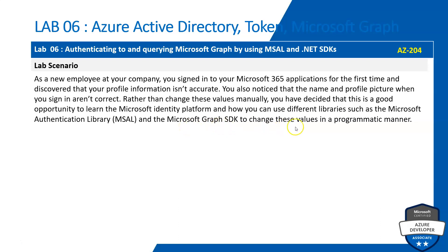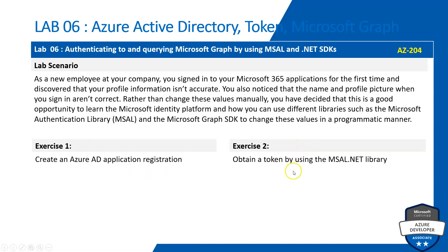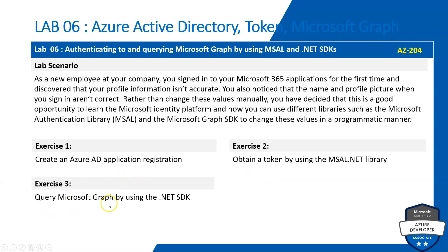You'll use different libraries such as the Microsoft Authentication Library (MSAL) and the Microsoft Graph SDK to change these values in a programmatic manner. We'll complete the lab in 4 exercises: Exercise 1 — create an Azure Active Directory application registration; Exercise 2 — obtain a token using the MSAL library; Exercise 3 — work with the Microsoft Graph API; Exercise 4 — clean up the resources.